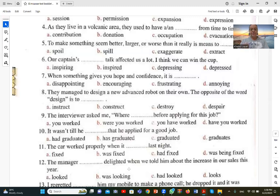Number nine. The interviewer asked me where before applying for this job. Where have you worked? المحاور اللي كان بيعمل معايا المقابلة بيسألني where have you worked before applying for this job. This is the correct answer, B.